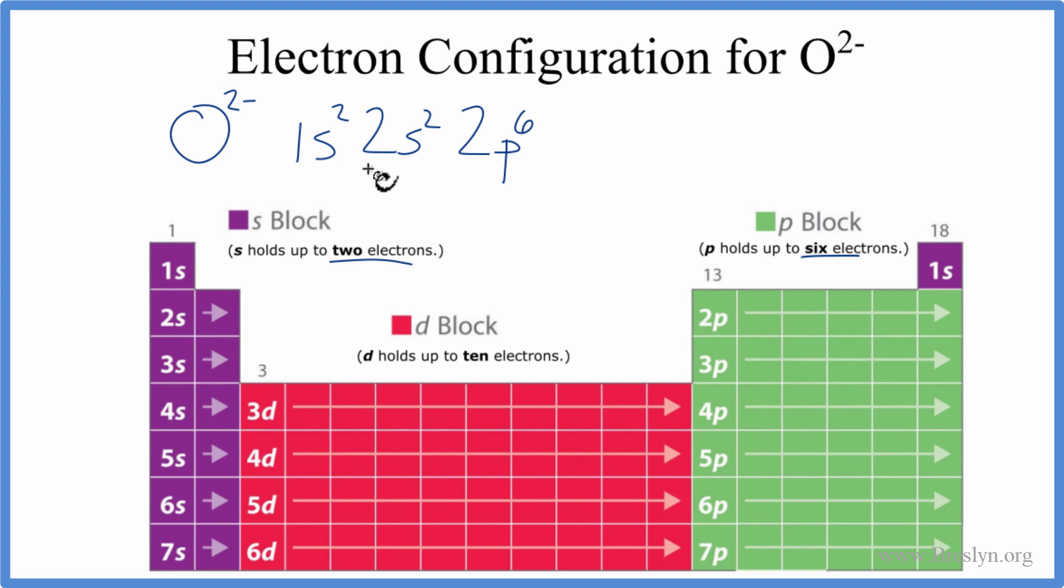You'll note that the second energy level, all these electrons with the 2 in front of them, there are 6 plus 2, we have 8. These are the valence electrons. When we have these eight valence electrons, this shell is full. This is a very stable configuration.